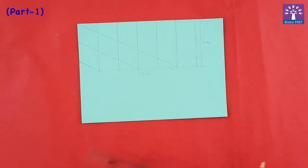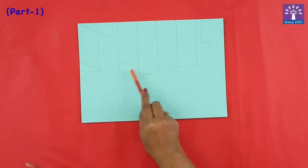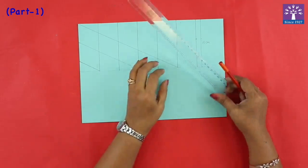And we leave this line so we've left one line and we have drawn lines alternatively. We'll draw lines similarly.